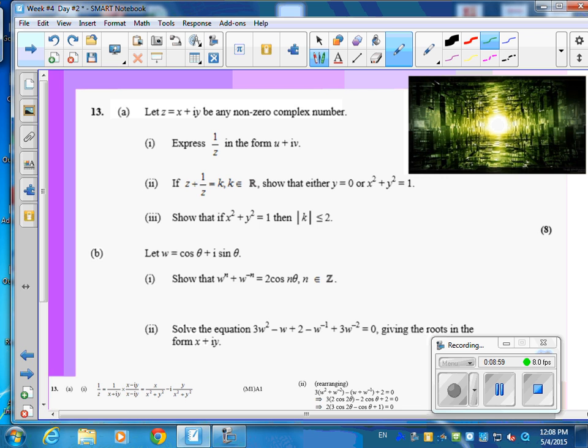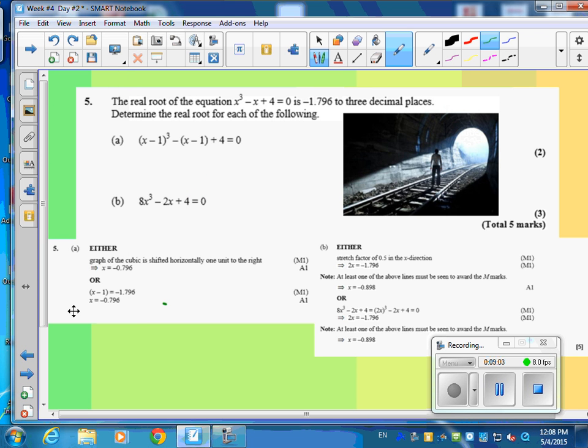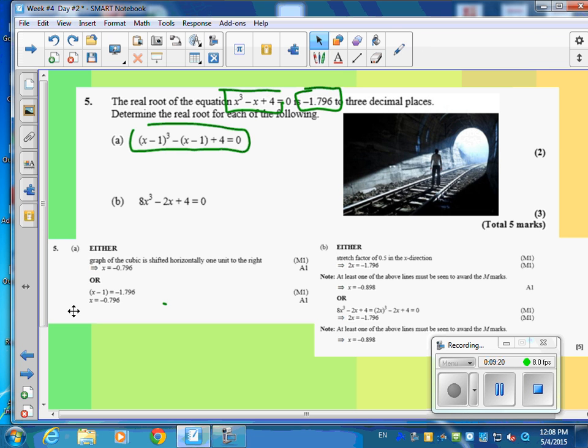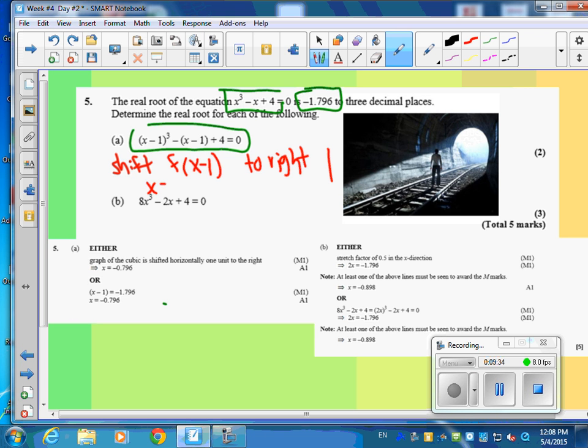Do you want to see five quick? I want to show you five really super quick. The real root of equation x cubed minus x plus four equals zero is this. This is one of the roots. So what do you notice that's different about this formula and this one? It's shifted how? This is shifted to the right. So one mark is shift f of x minus one to the right one. That's one mark. Then, if that's true, you just take x equal to negative 1.796 and move it to the right one. And you'll get negative 0.796. There's your answer mark. So I have one mark for method and an answer mark.